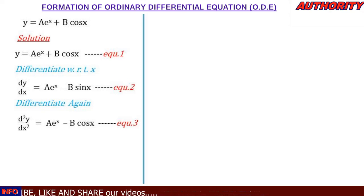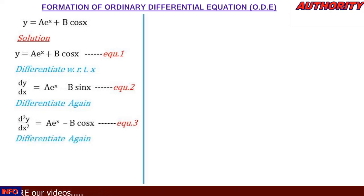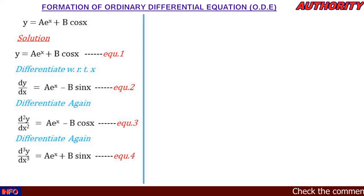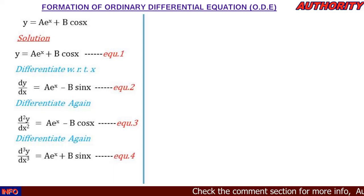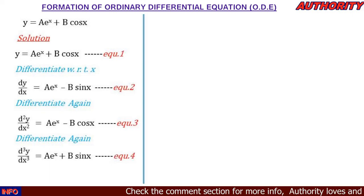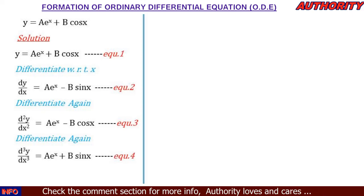Now let's differentiate for the third time. d³y/dx³ equals ae^x, and when we differentiate −b·cos(x) it gives +b·sin(x). We have now differentiated three times, and this last result we call equation 4.